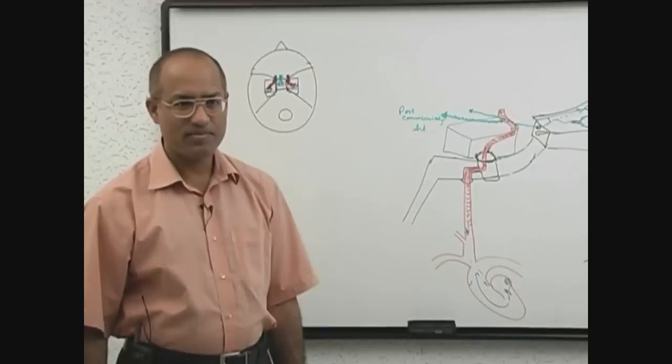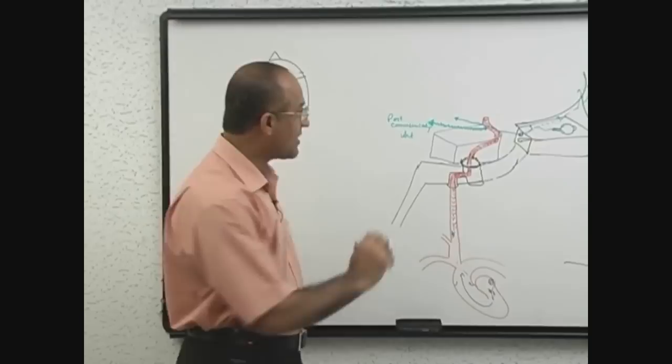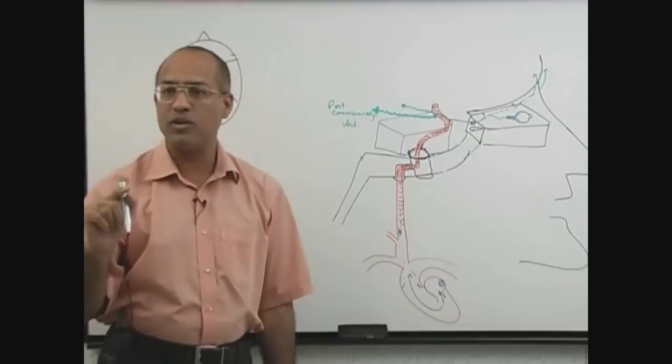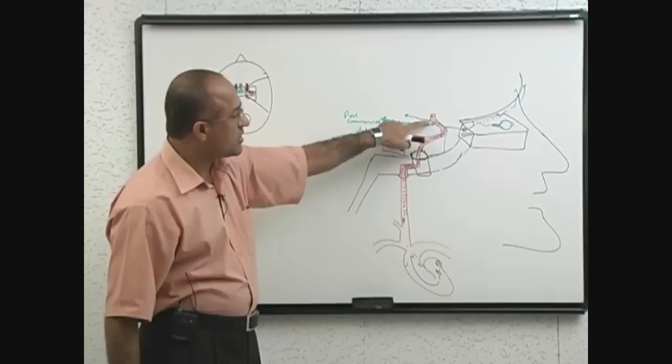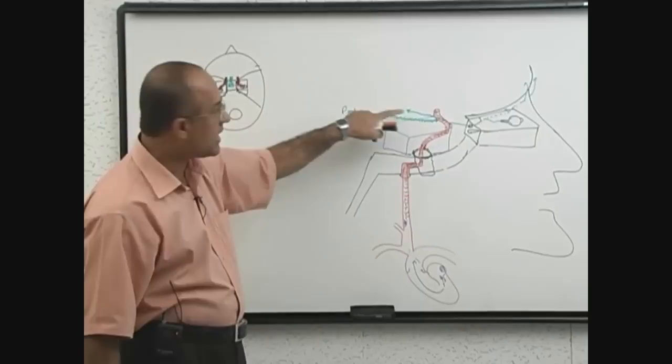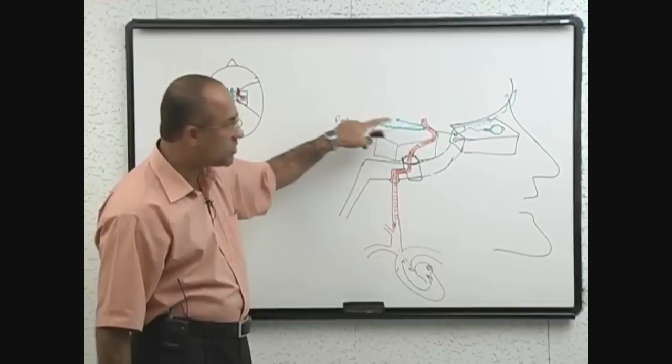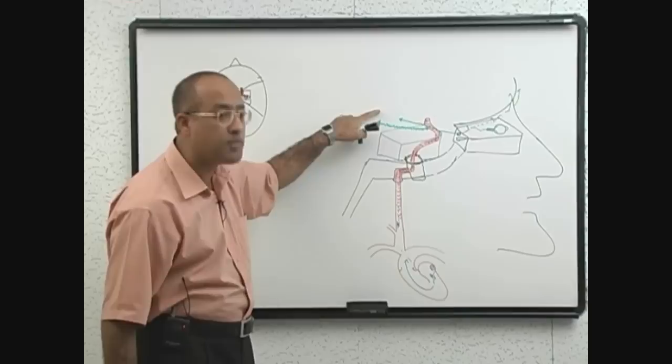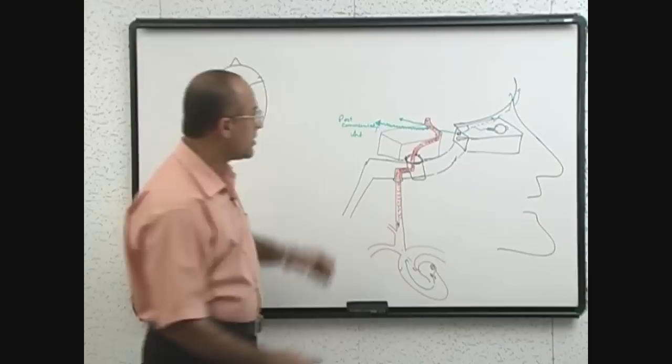The second branch going posteriorly is the anterior choroidal artery. Choroidal arteries supply the choroid plexus of the third ventricle and lateral ventricles. This choroidal artery comes from the anterior circulation, so it is called the anterior choroidal artery, but it travels posteriorly to supply the choroid plexus of the lateral ventricles. Later we will learn that from the posterior cerebral artery there are posterior choroidal arteries.